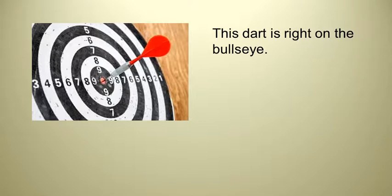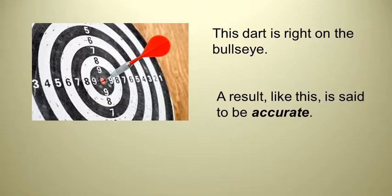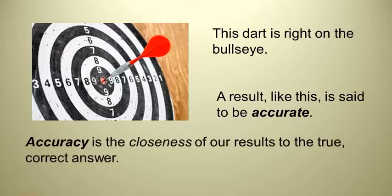If this is your result in a scientific experiment, you've gotten a result and the result is right on what it's supposed to be, right on the correct answer. We call that accurate. When we say accurate or accuracy, that's the closeness of our answer or our results to the right answer or the true correct answer. Accuracy is something we're always shooting for.